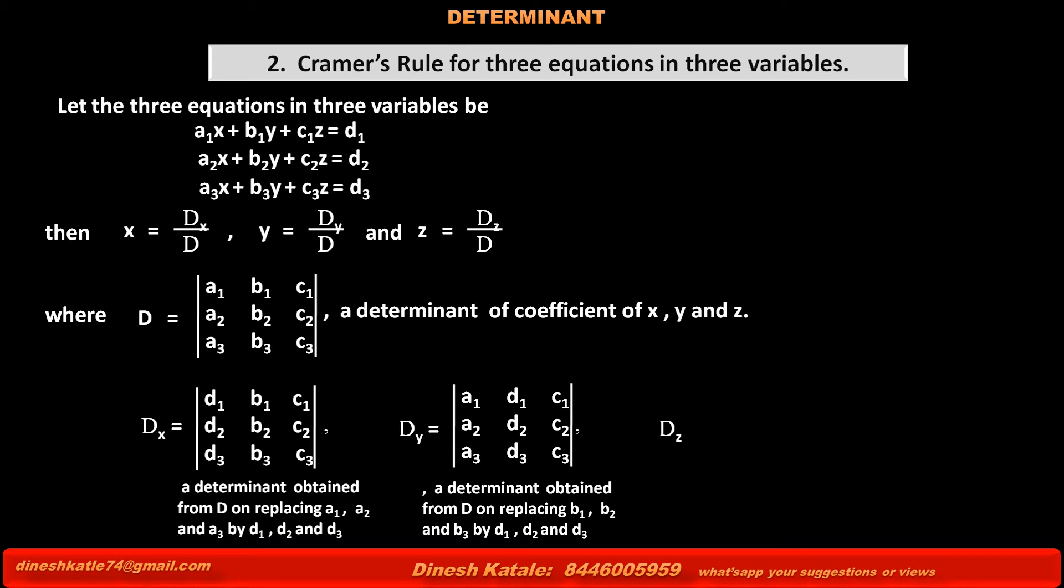Dz is equal to determinant obtained from the same above determinant D on replacing third column c1, c2, c3 by the constants d1, d2, d3.